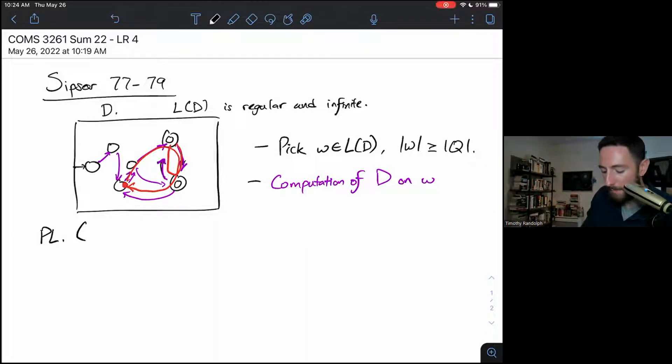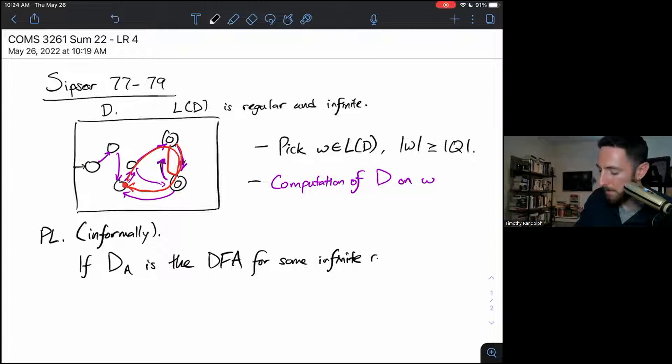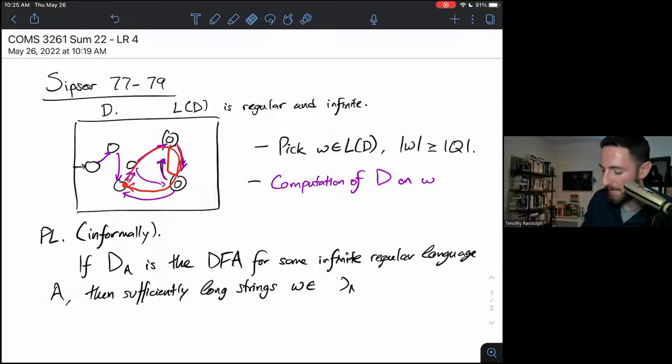So if I was going to state the pumping lemma informally, I would say if D sub A is the DFA for some infinite, regular language, A, then sufficiently long strings W in this language that DA recognizes. Oh, I suppose I've called that language A, haven't I? Sufficiently long strings W and A make loops.